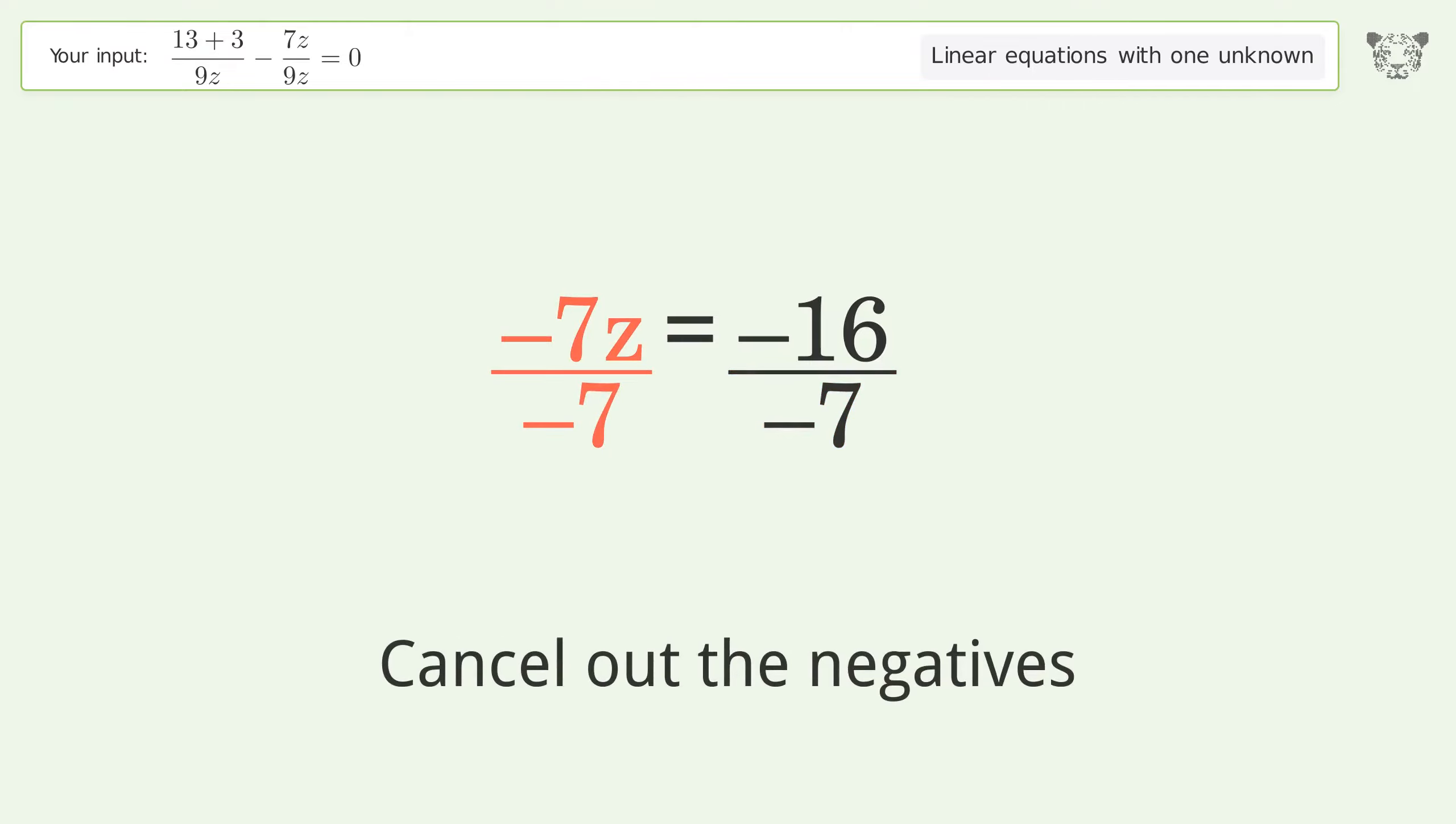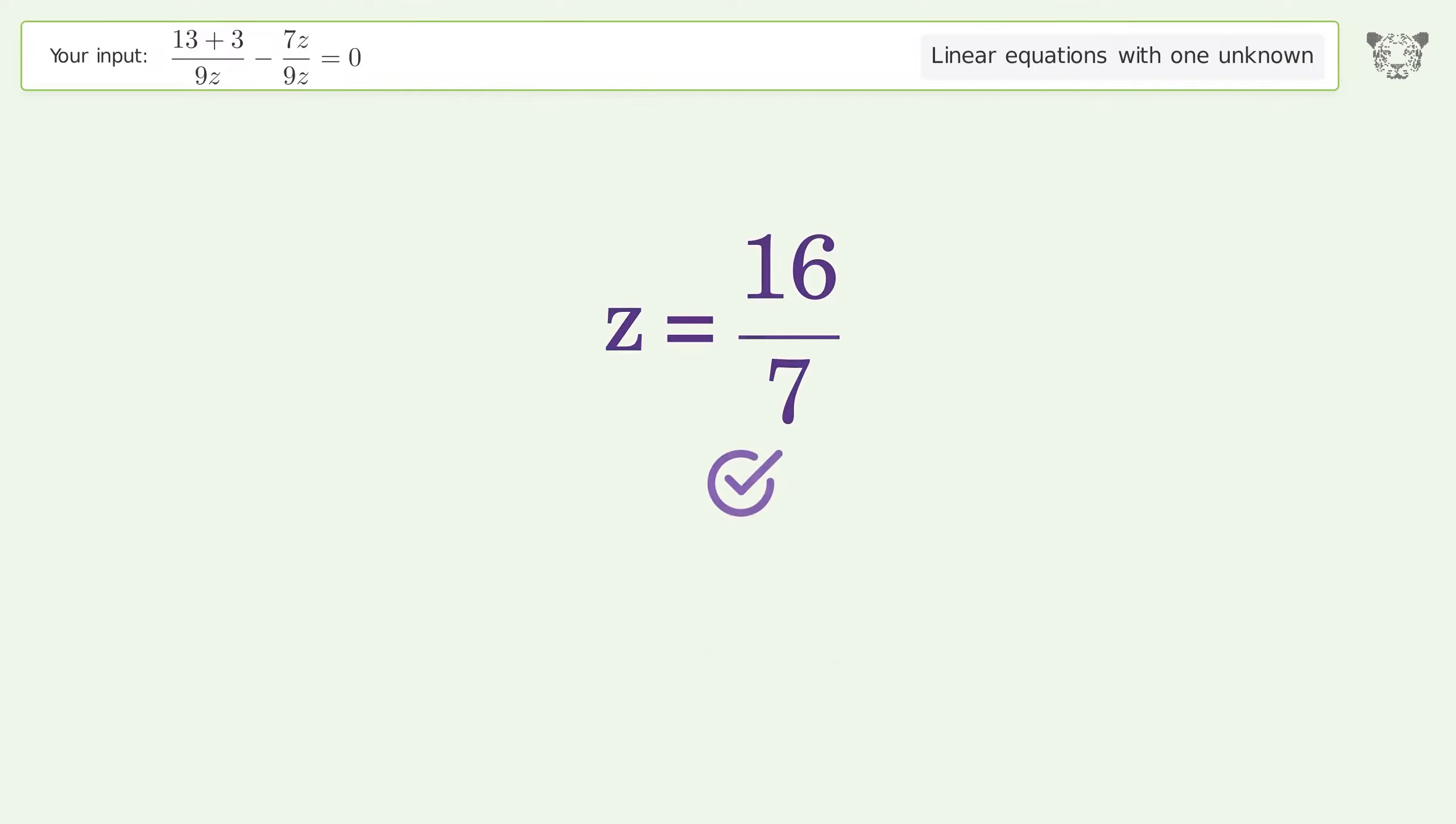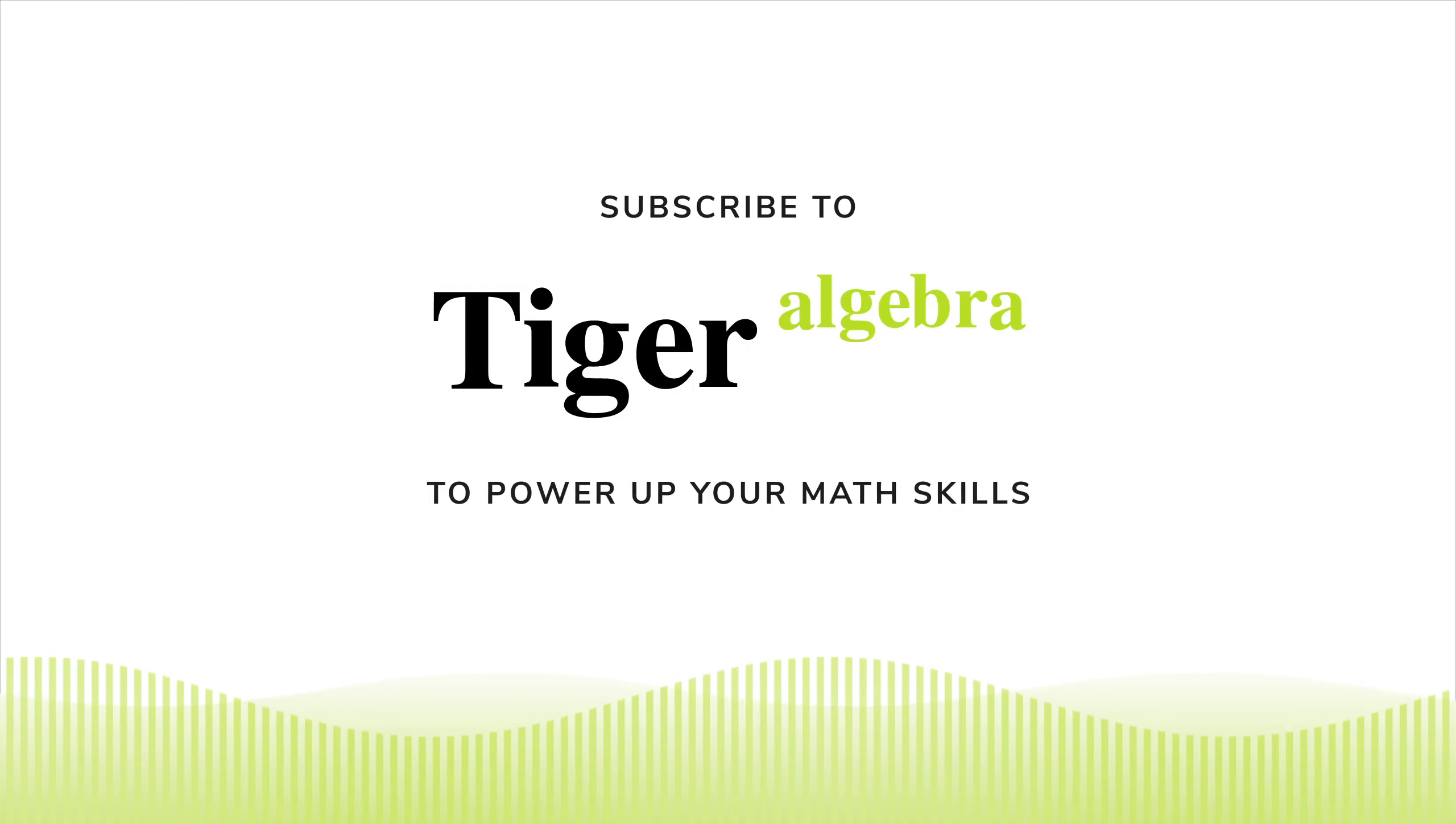Cancel out the negatives. Simplify the fraction. Cancel out the negatives. And so the final result is z equals 16 over 7.